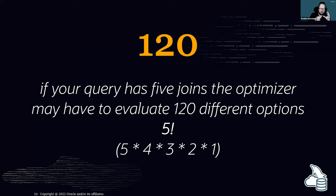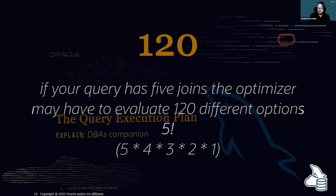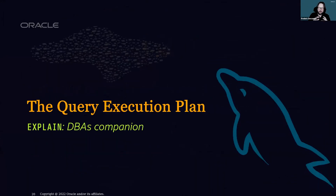If you have a query with five joins, the optimizer may have to evaluate 120 different options — five factorial — to find all the plans and determine the best one to execute the query.